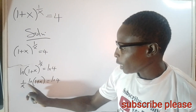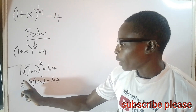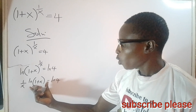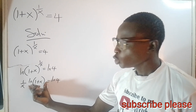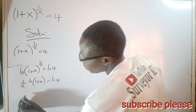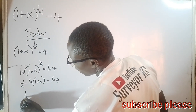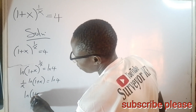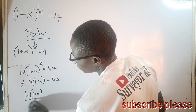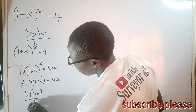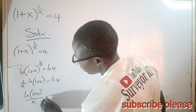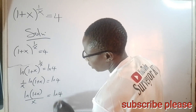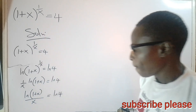I know that I can rewrite this: ln of (1 + x) divided by x is now equals to the ln of 4.